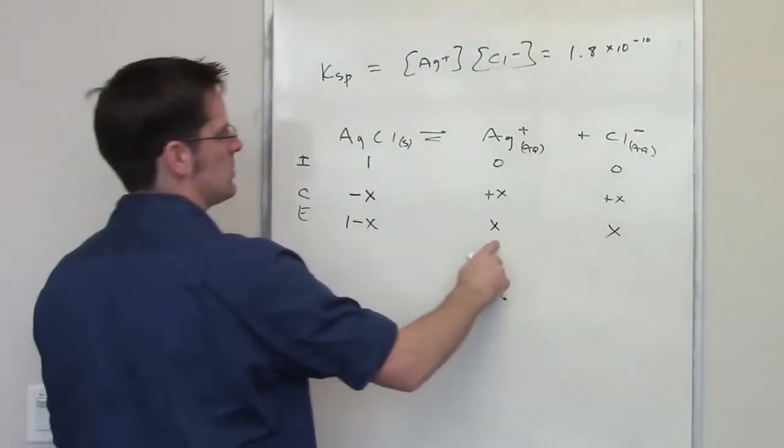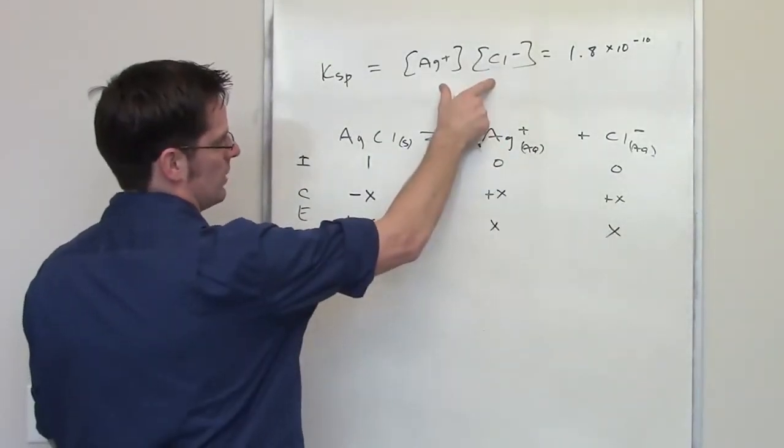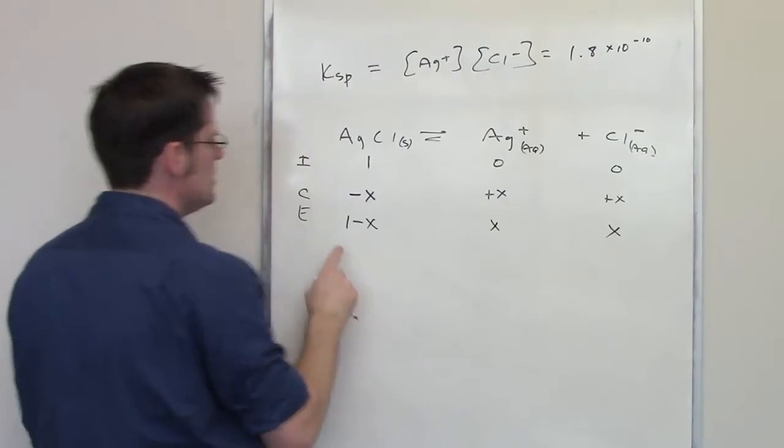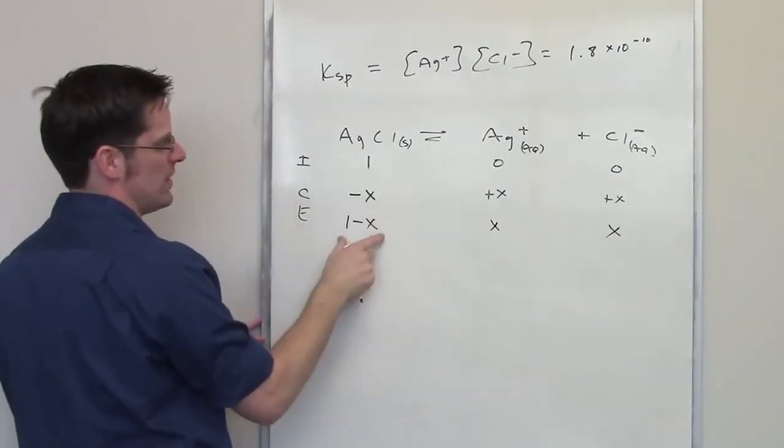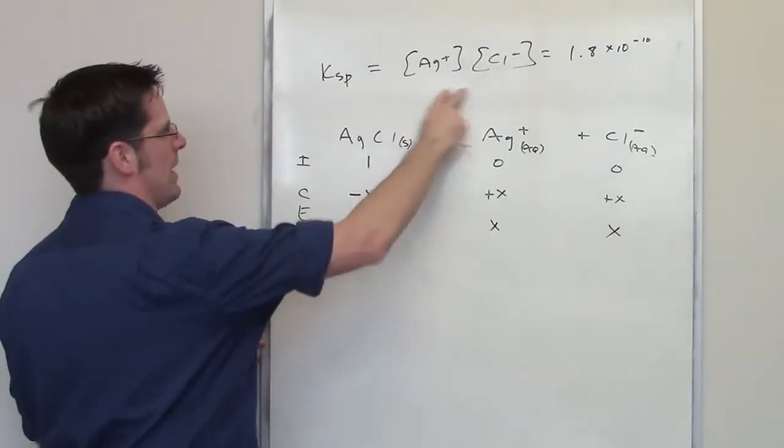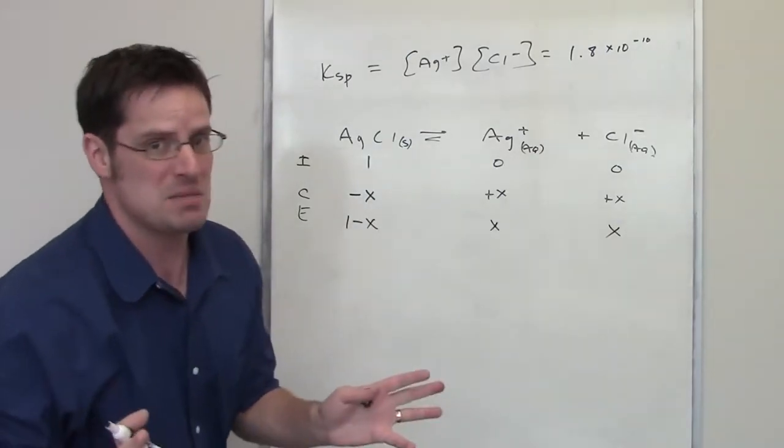Now, I can take these values and throw them in to their corresponding locations here. Notice that the identity of this value right here at silver chloride doesn't appear anywhere on the KSP, so it doesn't matter.